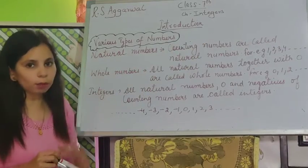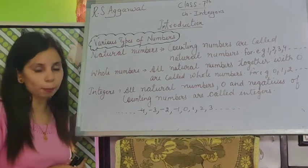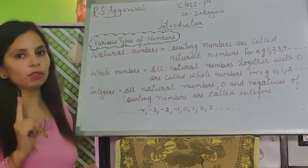Counting numbers are called natural numbers. So, the numbers like 1, 2, 3, 4, all these numbers are natural numbers. Natural number starts from 1.